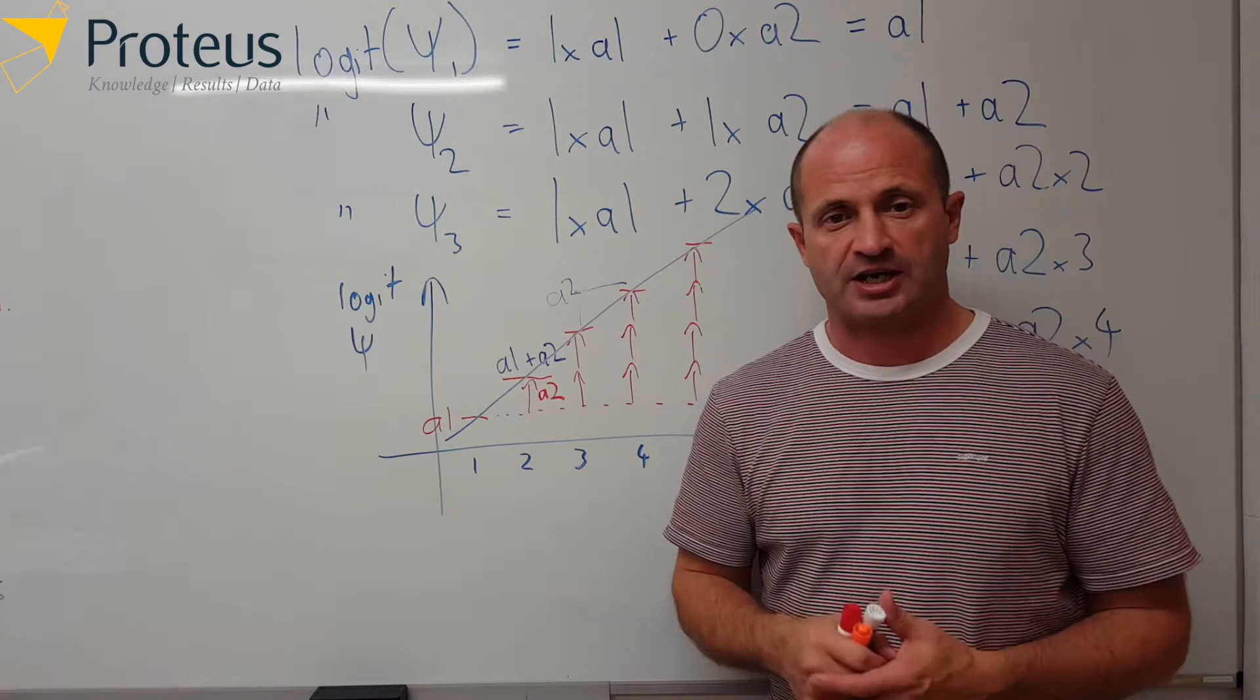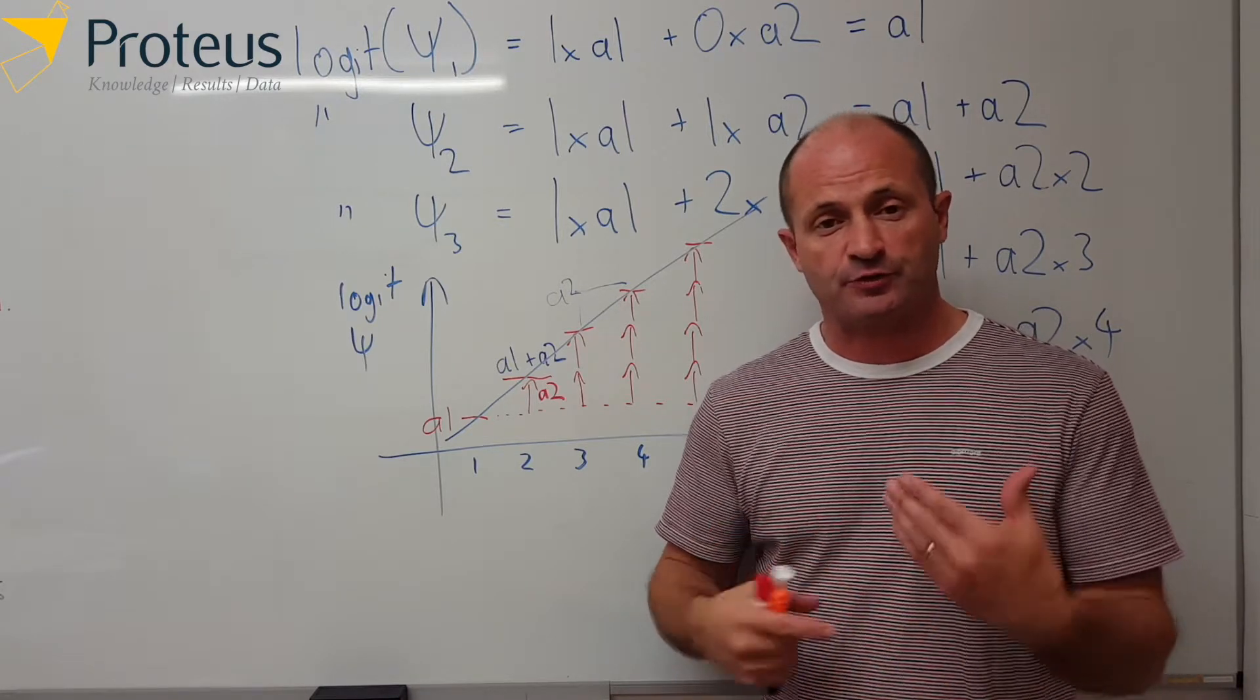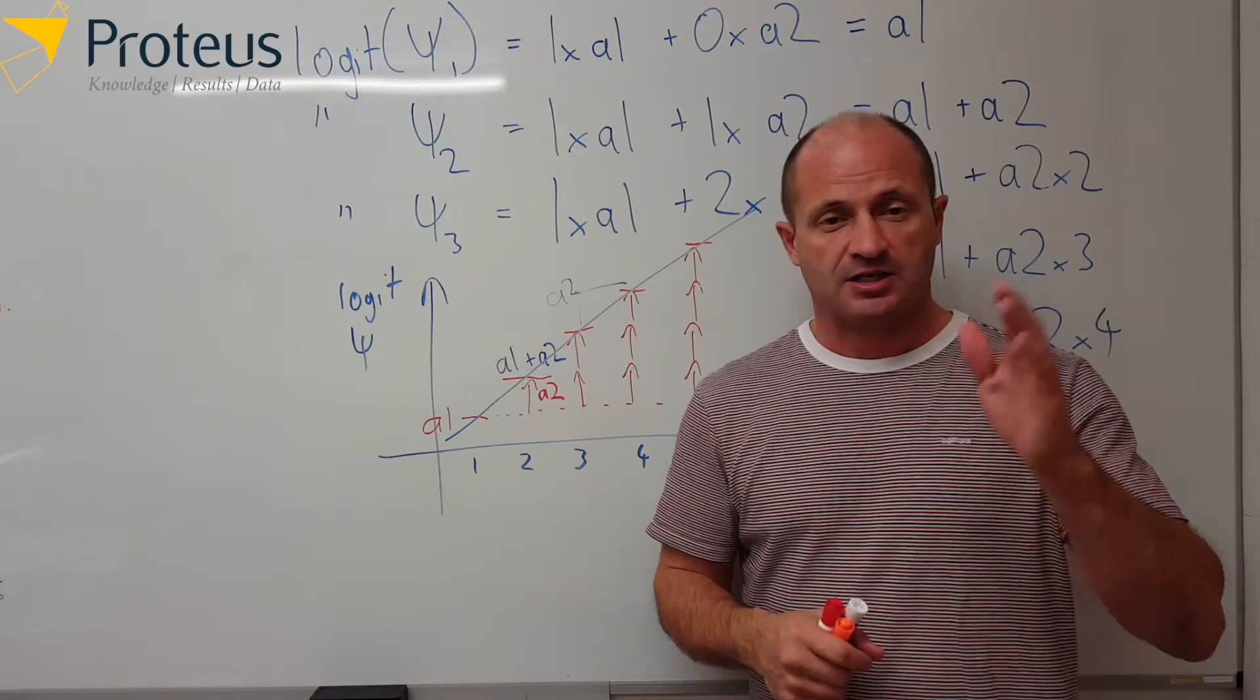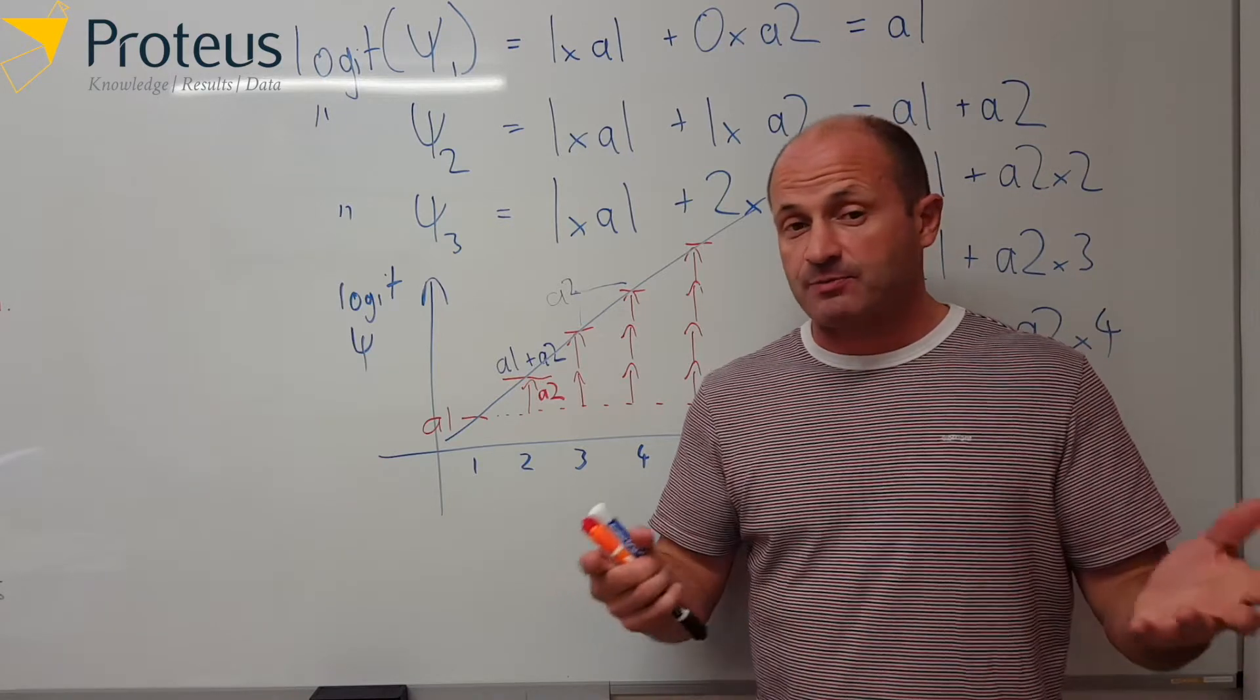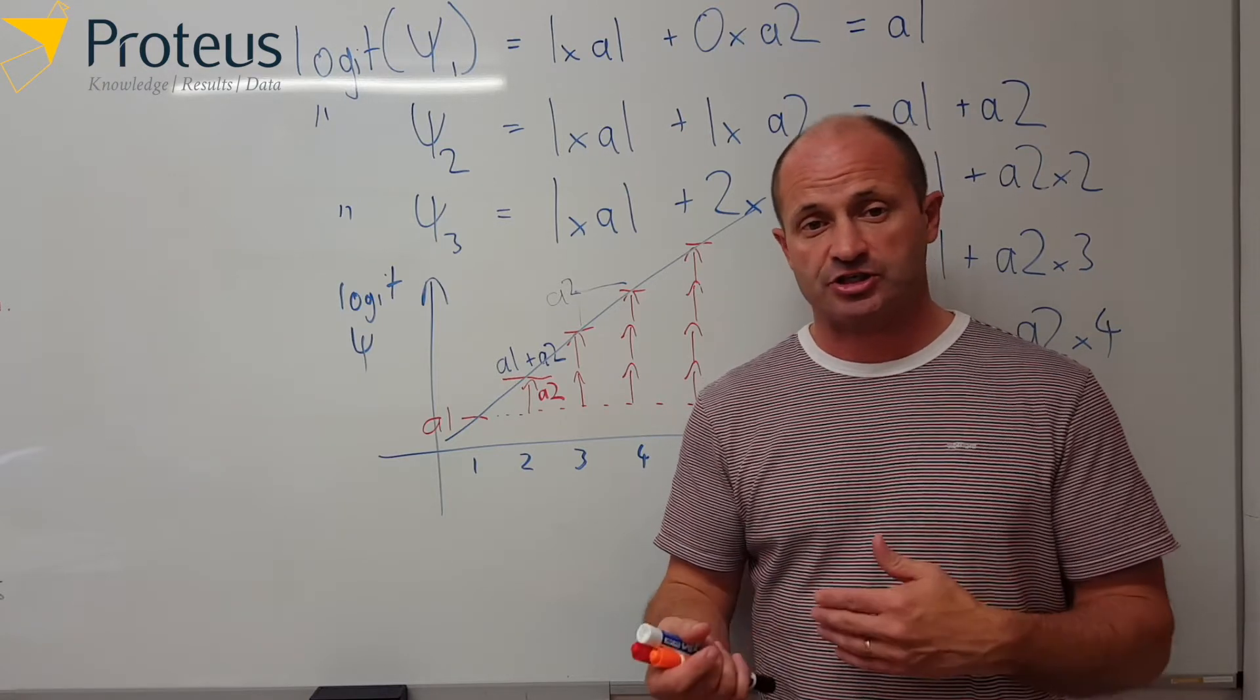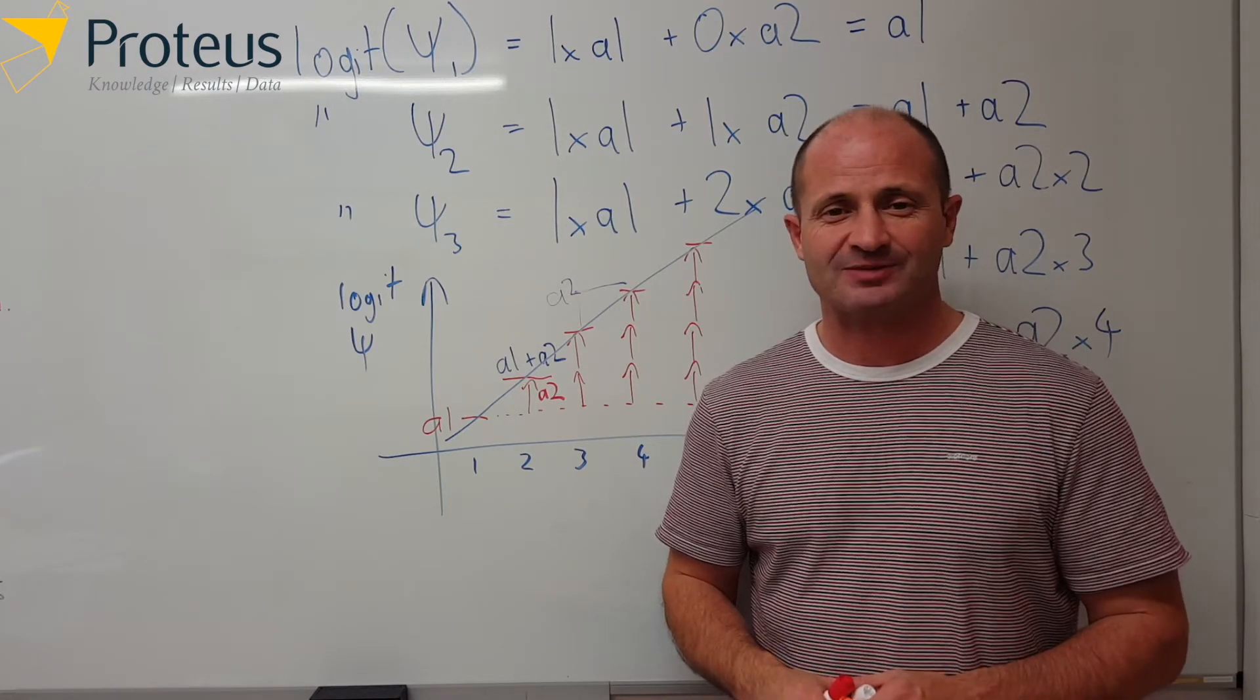So there you go, hope you found that useful. If you want to fit a trend in occupancy, we can just set up that design matrix. We have a 1 in the first column and then 0, 1, 2, 3, 4 in the second column. Same applies if we're looking at fitting a trend on other parameters, so colonization or extinction or maybe detection. It's the same basic idea. So hope you found that useful. Until next time, see you later.